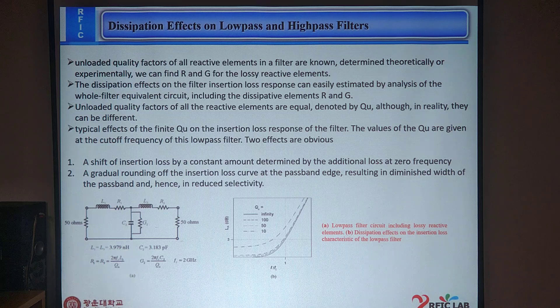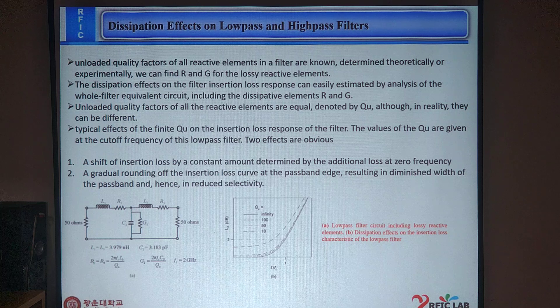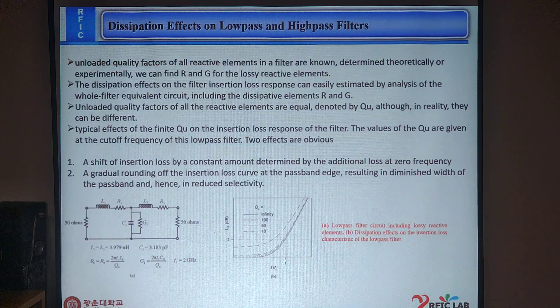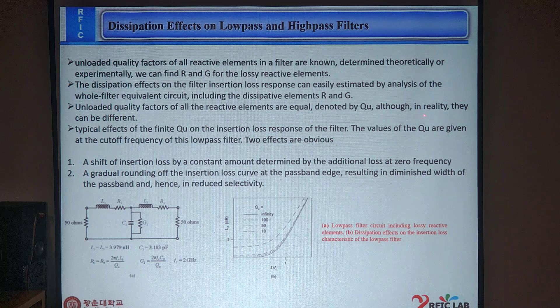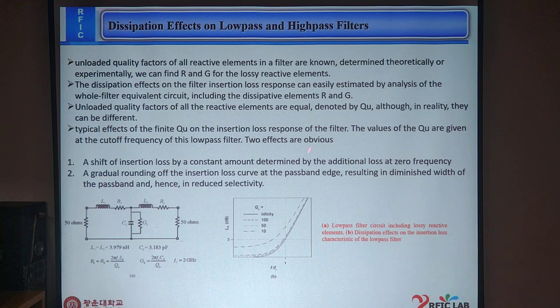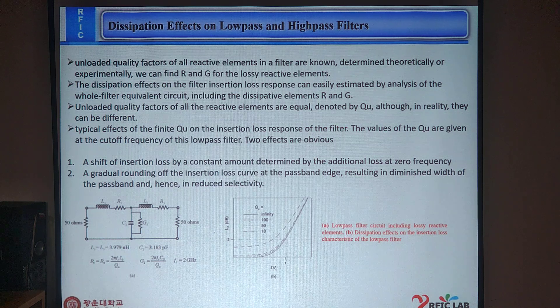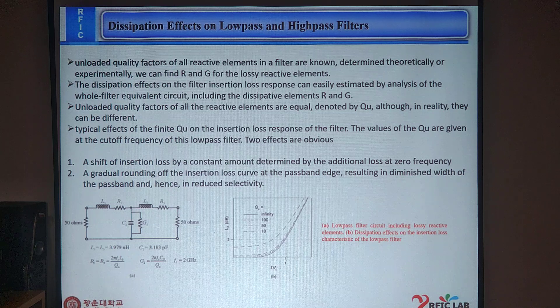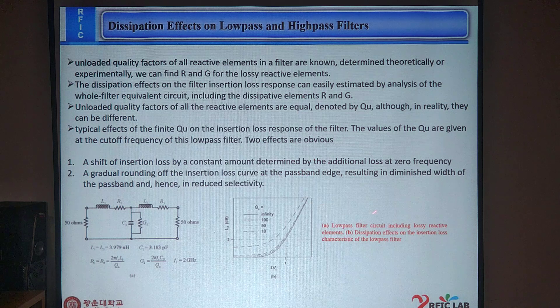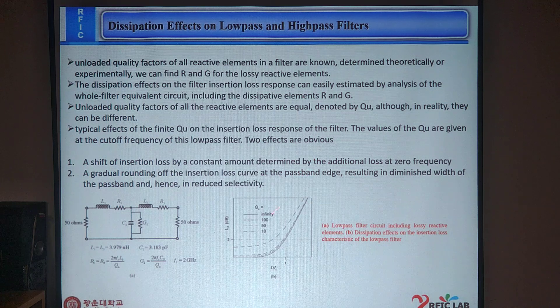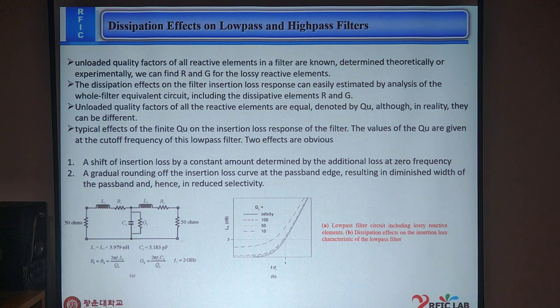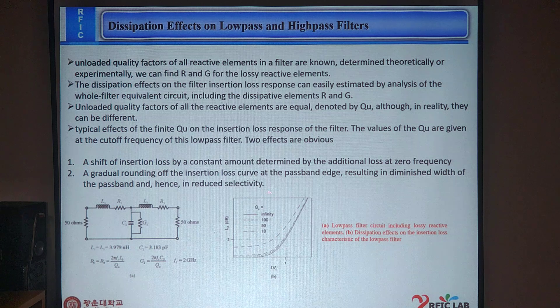Unloaded quality factor of all reactive elements in a filter are known, determined theoretically or experimentally. We can find R or G by using the formula. Unloaded quality factor of all reactive elements are equal, denoted by Q, although in reality they can be different. Typical effect of a finite Q on the insertion loss response of the filter, the value of Q are given at the cutoff frequency of the low-pass filter. There are so many effects. Some of them are here: a shift of insertion loss by constant amount determined by the additional loss at zero frequency. This figure here we can see low-pass filter circuit including lossy reactive elements. This one and dissipation effect of insertion loss characteristic of the low-pass filter here we can see in Figure B.